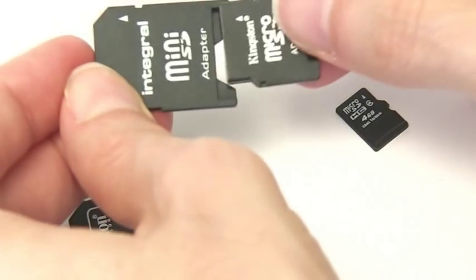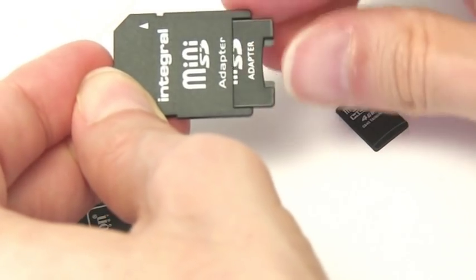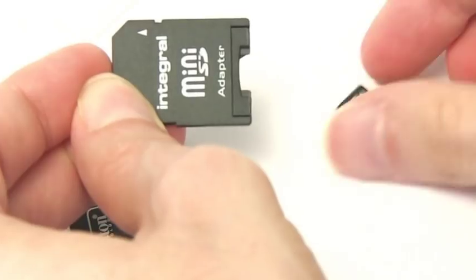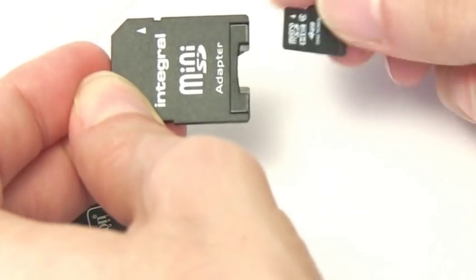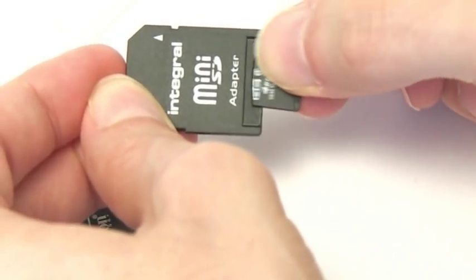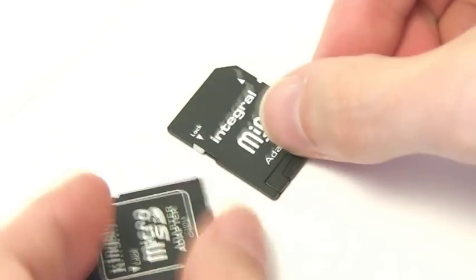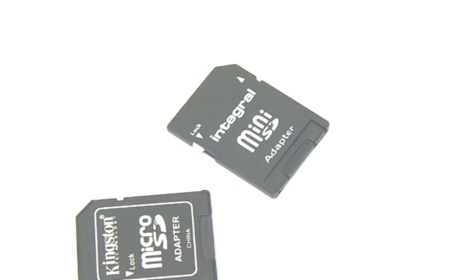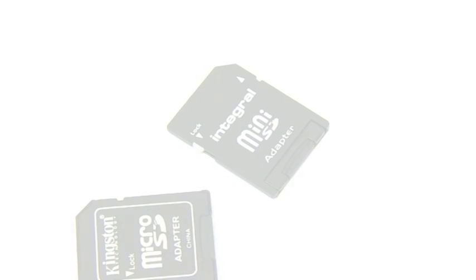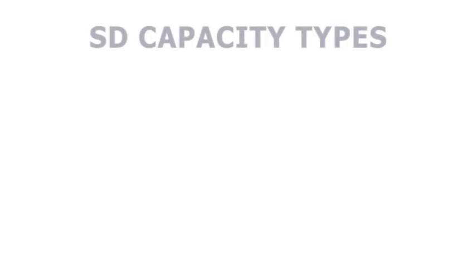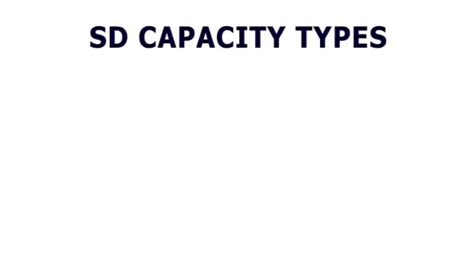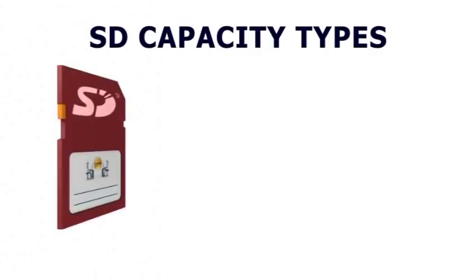While the larger cards cannot fit in smaller slots, micro and mini adapters are available. SD cards also come in three capacity types known as SD, SDHC and SDXC.